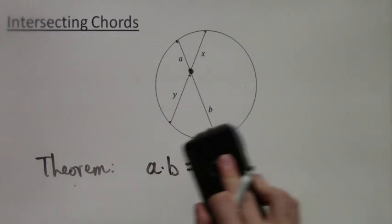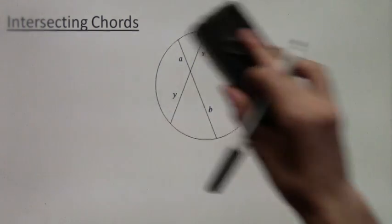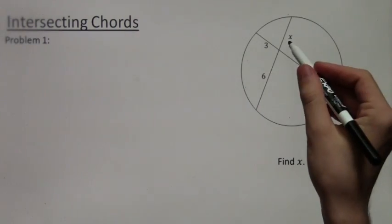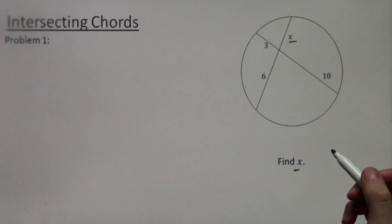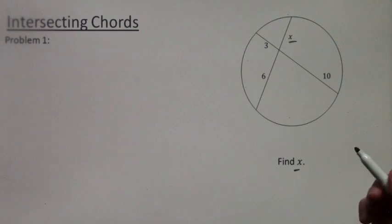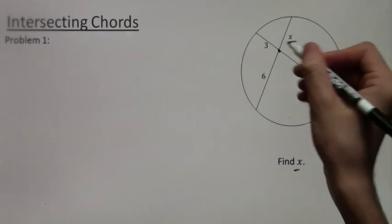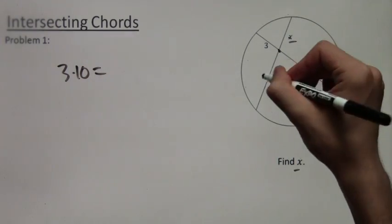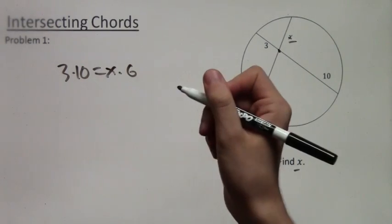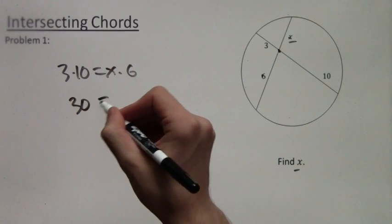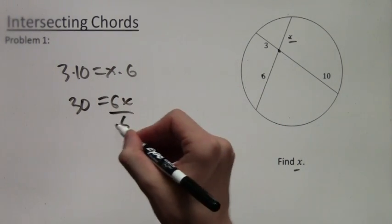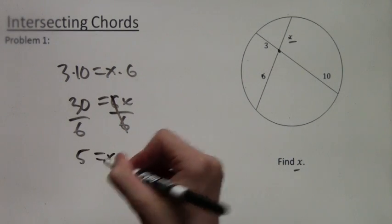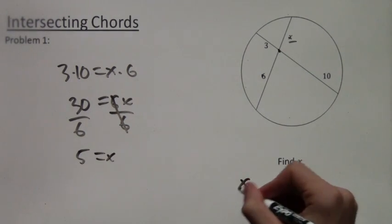We'll apply this to a few examples. In this first example, we need to find X. Applying the theorem, we have 3 times 10 equals X times 6. So 30 equals 6X. Dividing both sides by 6, we get X equals 5.